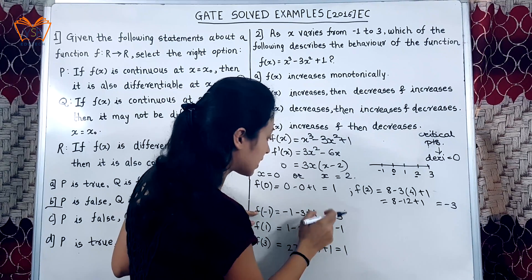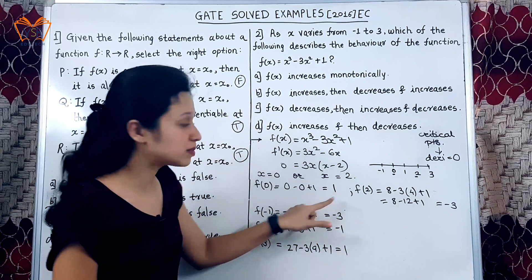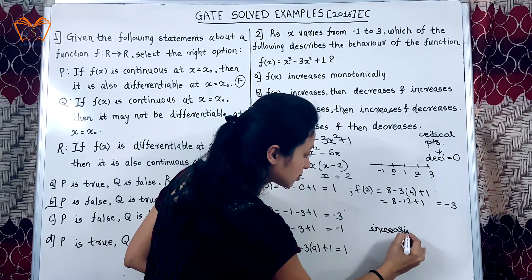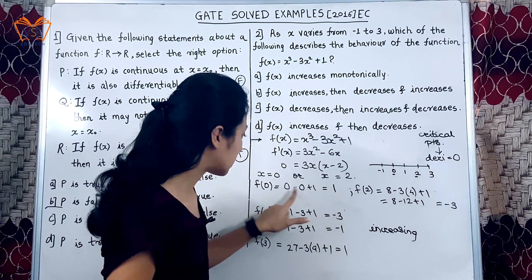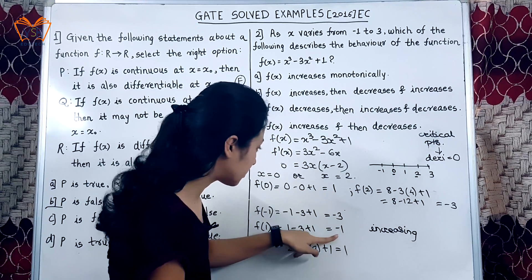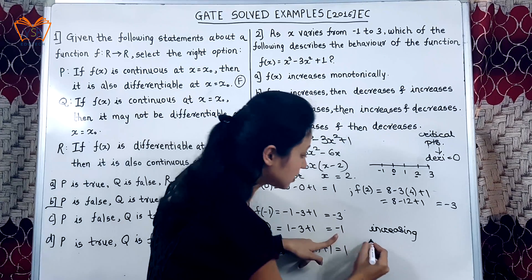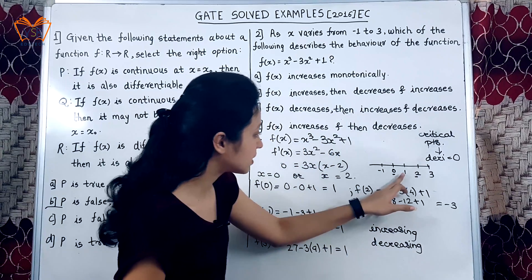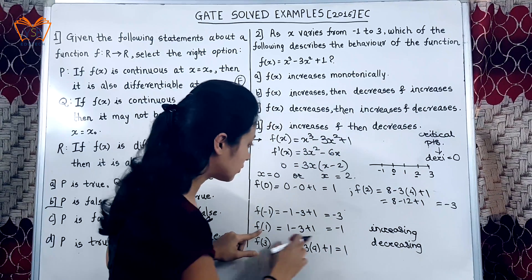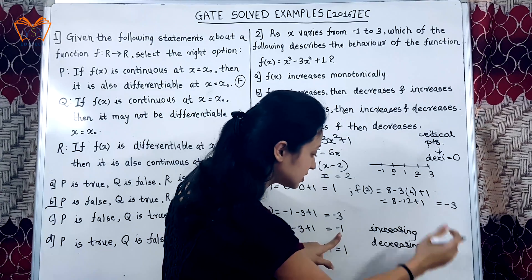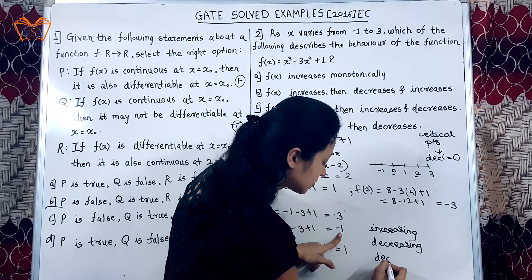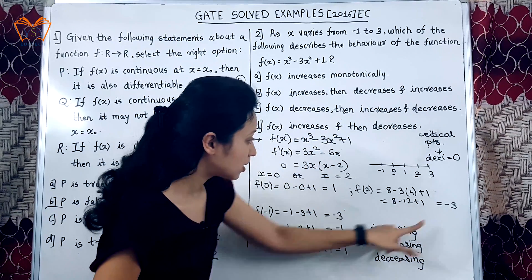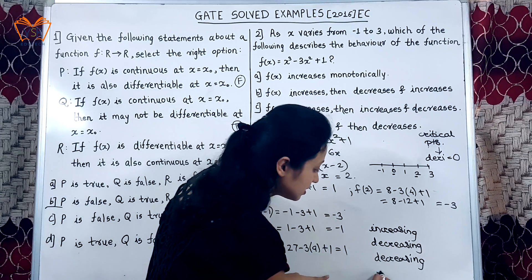From minus 1 to 0 the value of function is changing from minus 3 to 1 that means function value is increasing. After that from 0 to 1 at 0 we have 1 at 1 we have minus 1 that means it is decreasing. After that from 1 to 2, minus 1 to minus 3 that means it is again decreasing. And at the last point from 2 to 3 minus 3 to 1 that means it is increasing.